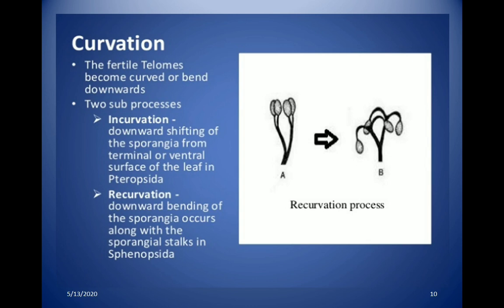Curvation is the process where fertile telomes become curved or bent downward. It involves two sub-processes: incurvation and recurvation. In incurvation, the sporangia shift downward to the ventral surface of the leaf, as in Pteropsida. In recurvation, not only do the sporangia bend downward, but their stalks also bend downward, as seen in Sphenopsida.